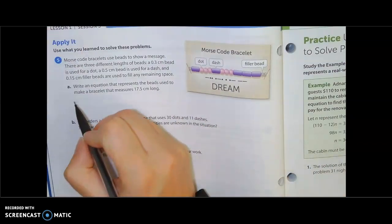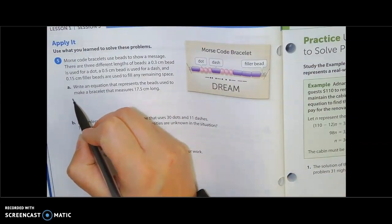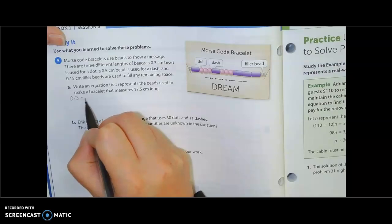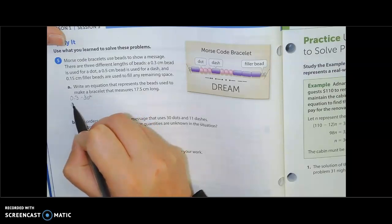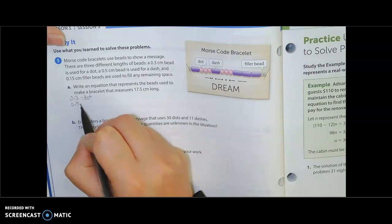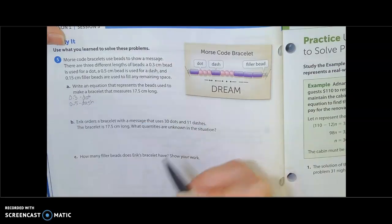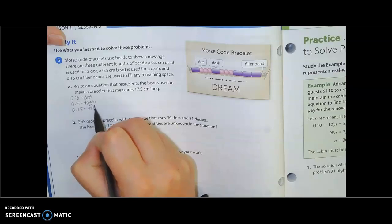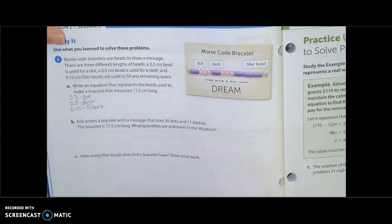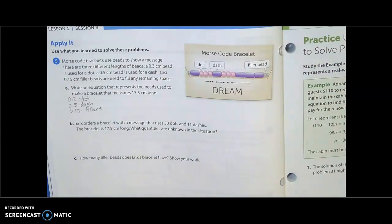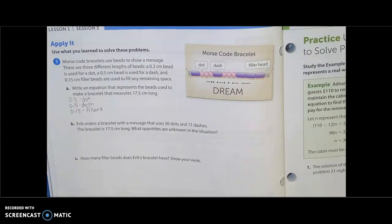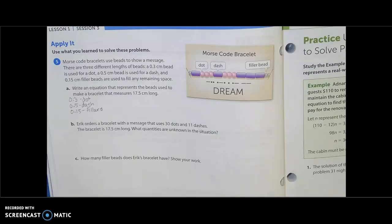So let's first talk about what each thing means. I know that 0.03 is a dot, that's how long a dot is. 0.5 is a dash, and 0.15 are fillers. We need to come up with variables for those. What do we want to call a dot, a dash, and a filler? Since dot and dash have the same first letter, we can't call them both D, so we just need to choose.